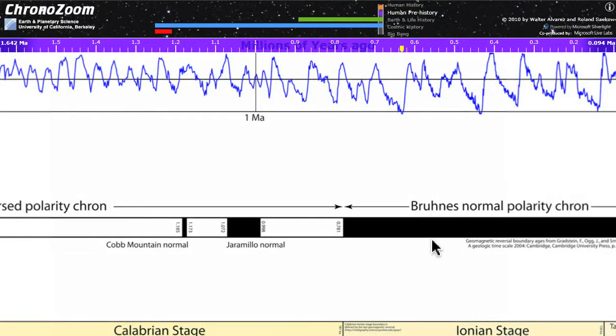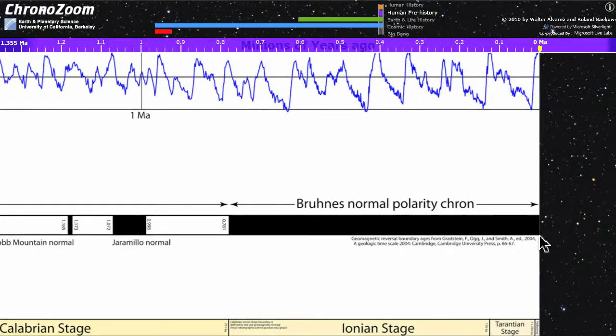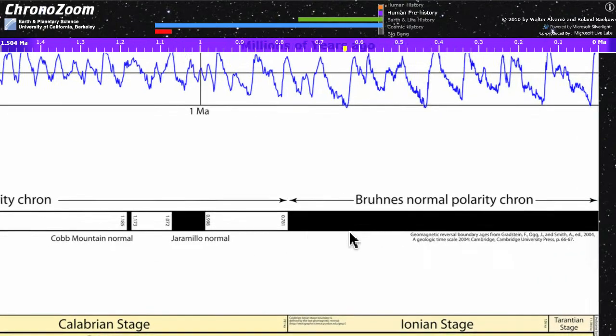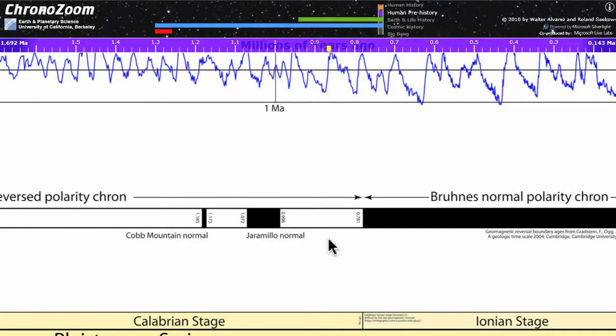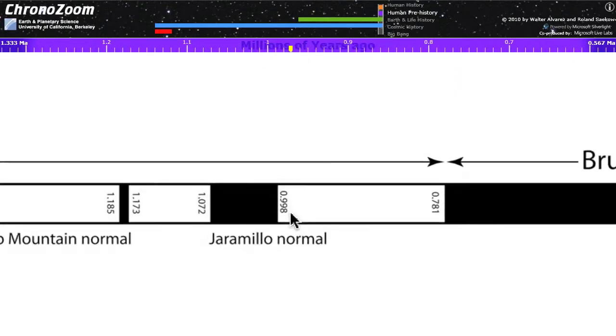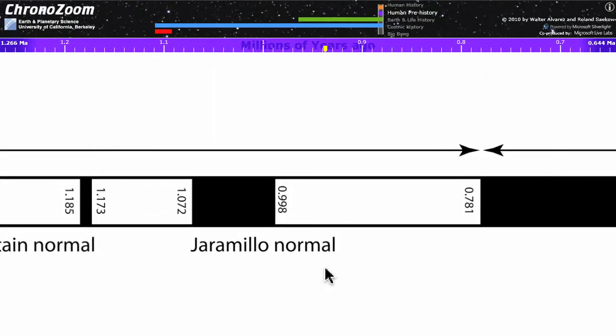Up above with the black and white bars, this shows you the polarity of the Earth's magnetic field through time. From zero at the right hand edge from the present time back to 781,000 years ago, the Earth's magnetic field has been in the present direction which we call normal. And then in the white box, you're in a reversed interval.